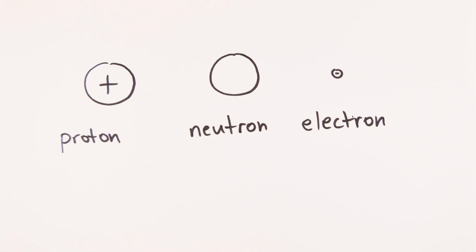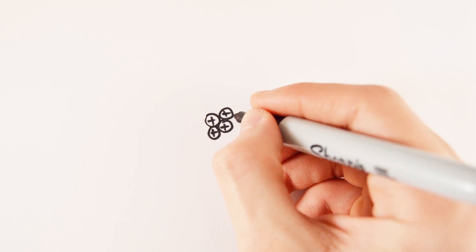Atoms contain three subatomic particles called protons, neutrons and electrons. The protons and neutrons are found in the nucleus at the centre of the atom. The nucleus is much smaller than the atom as a whole.